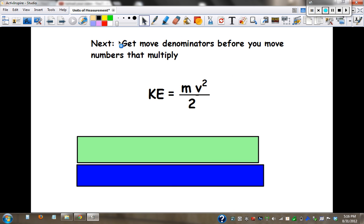The next rule: move denominators before you move numbers that multiply. So here we go. If we need to solve for v, should we move the m or the 2 first? Once again, back to the denominators. Move the denominators. This is divided by 2, so we will multiply by 2 on both sides.